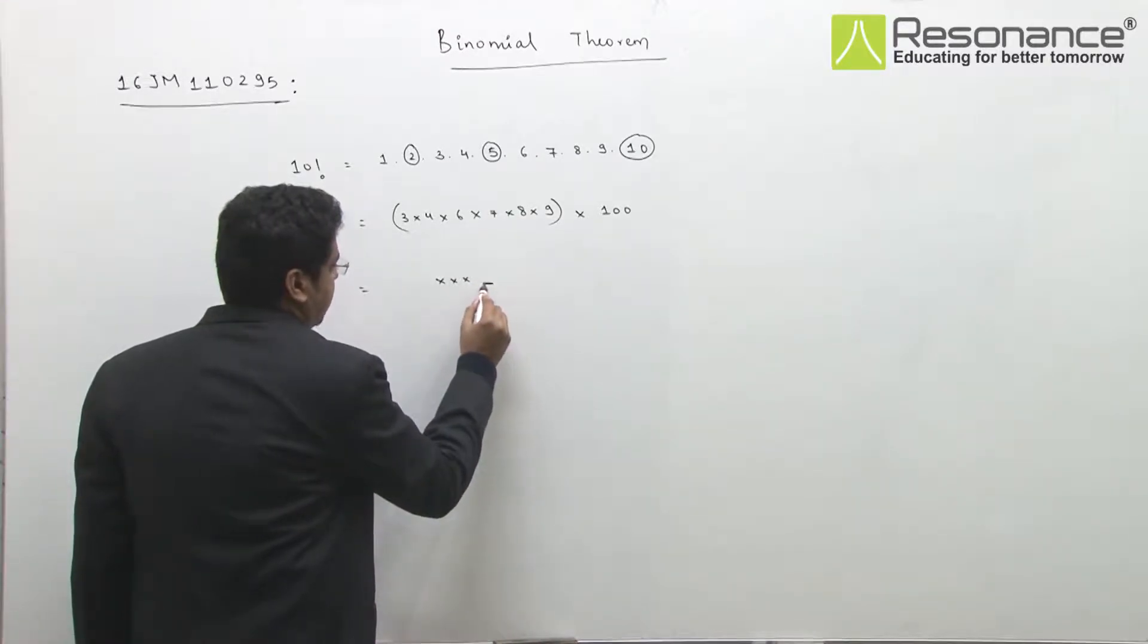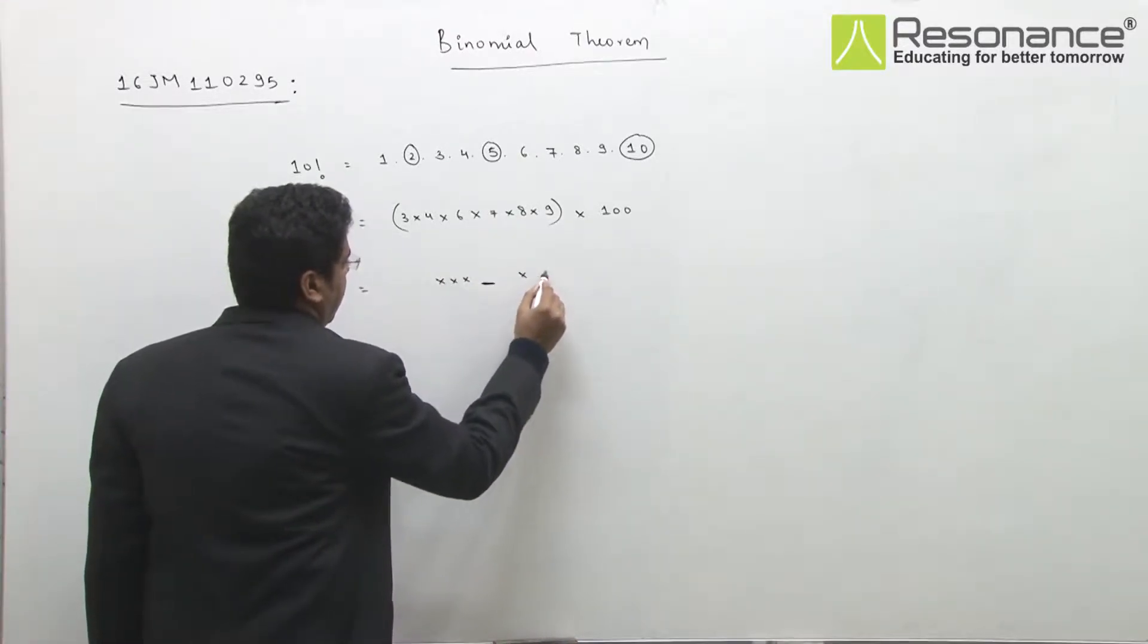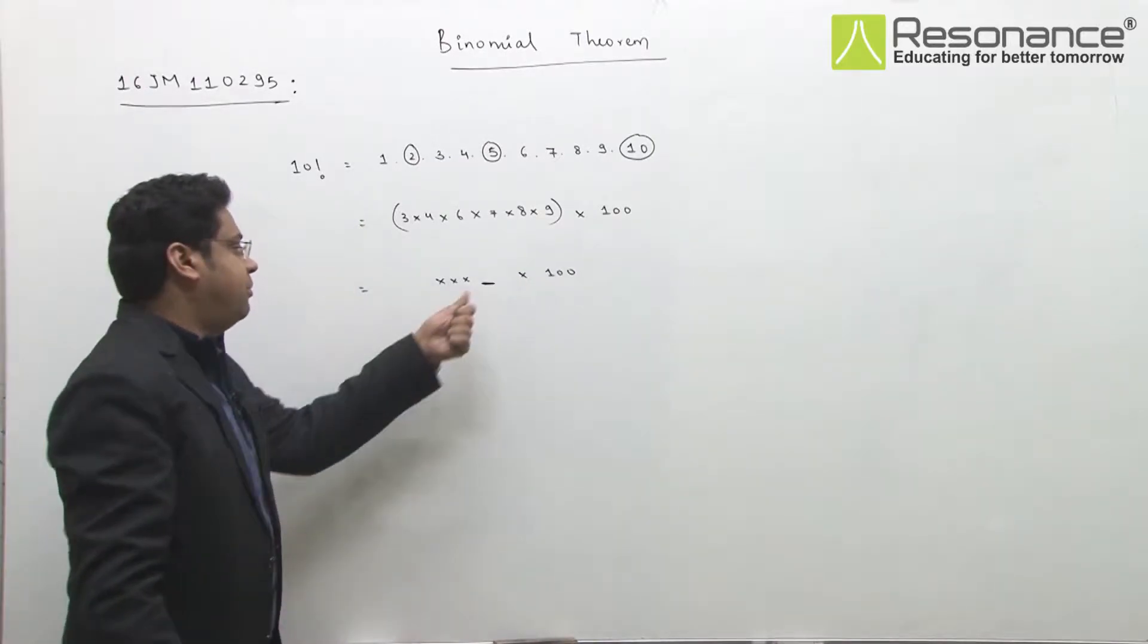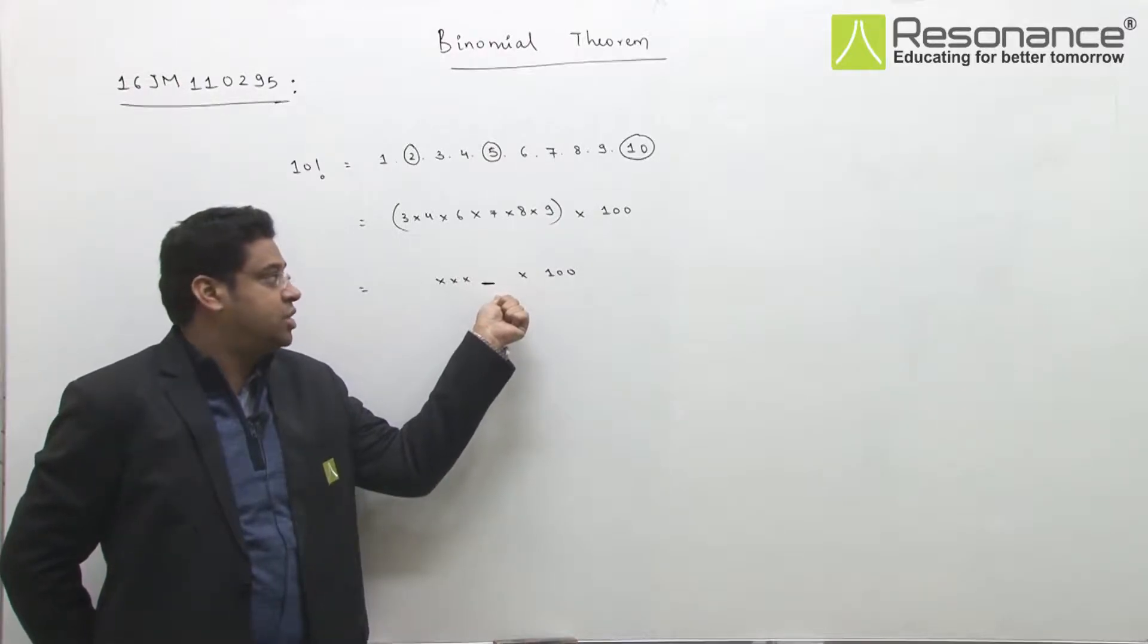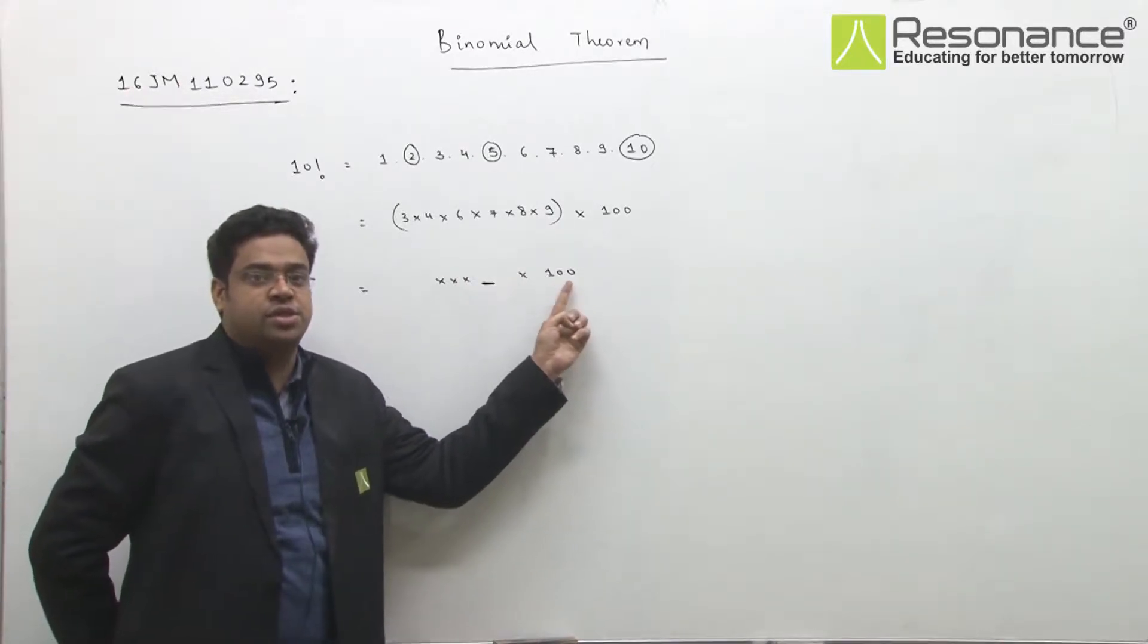The unit place will come into 100. For example, here 5, when it is into 100, the last three digits will be 5, 0, 0. So this will be like this.